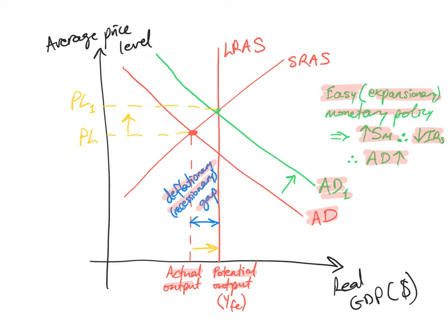While this will increase employment and boost short-term economic growth, it will also raise the price level from PL to PL1. So this is the neoclassical model, where an easy monetary policy closes a deflationary or recessionary gap — actual output moves closer to potential output — but as a trade-off the price level will rise from PL to PL1.